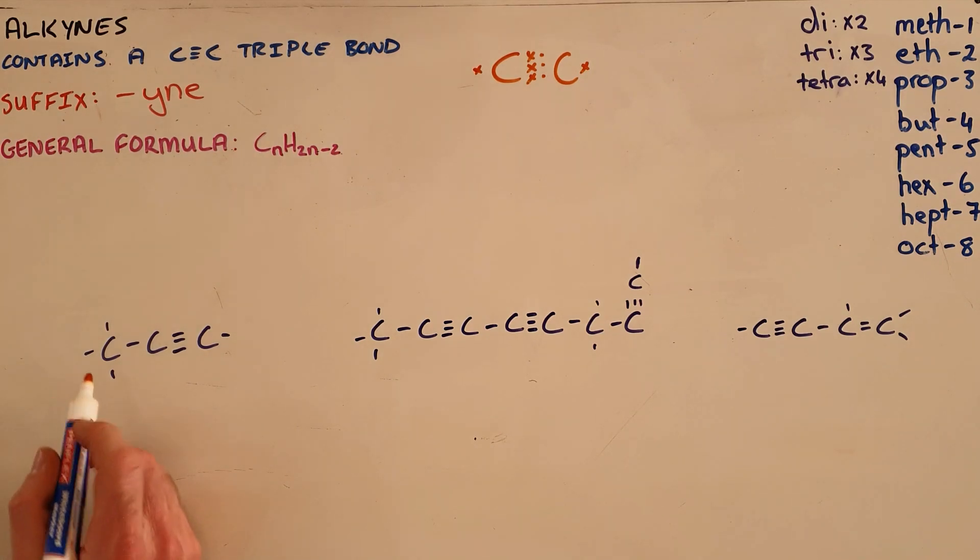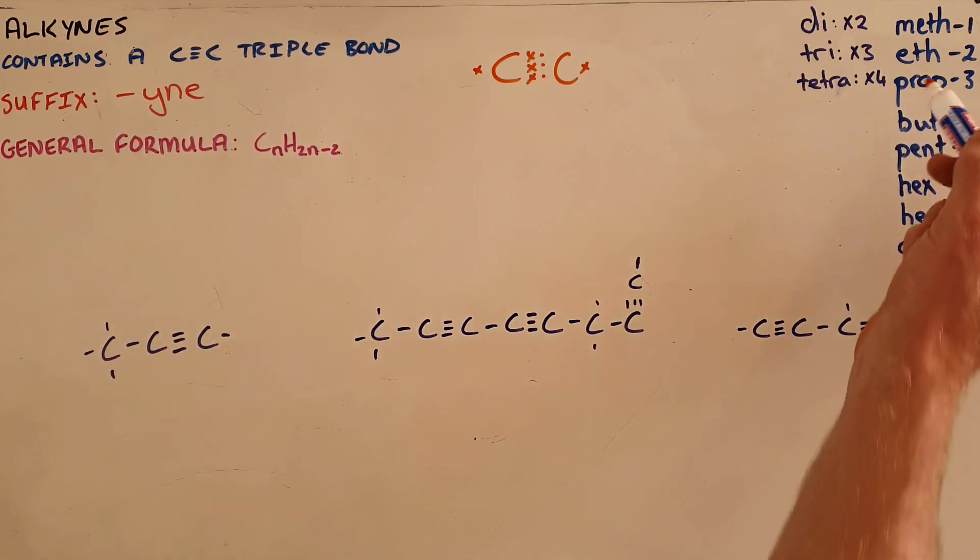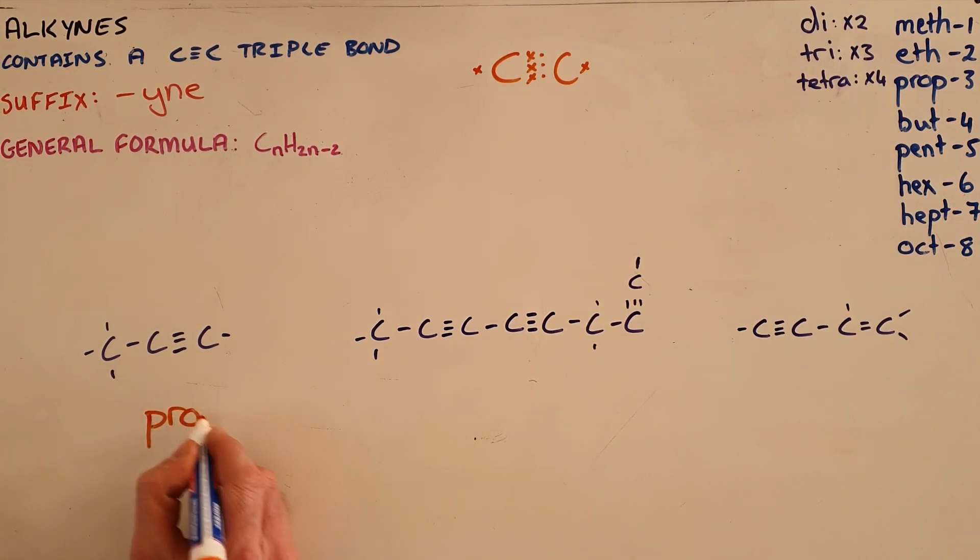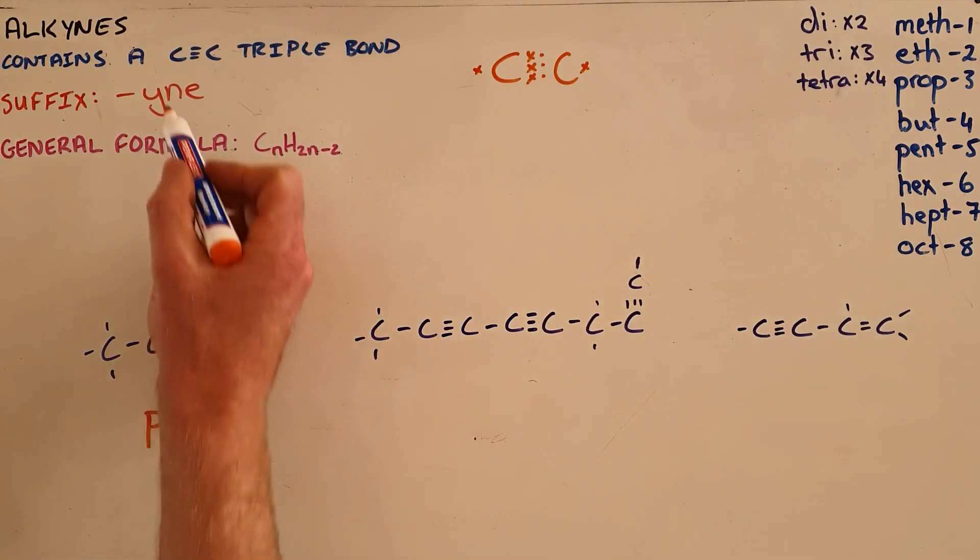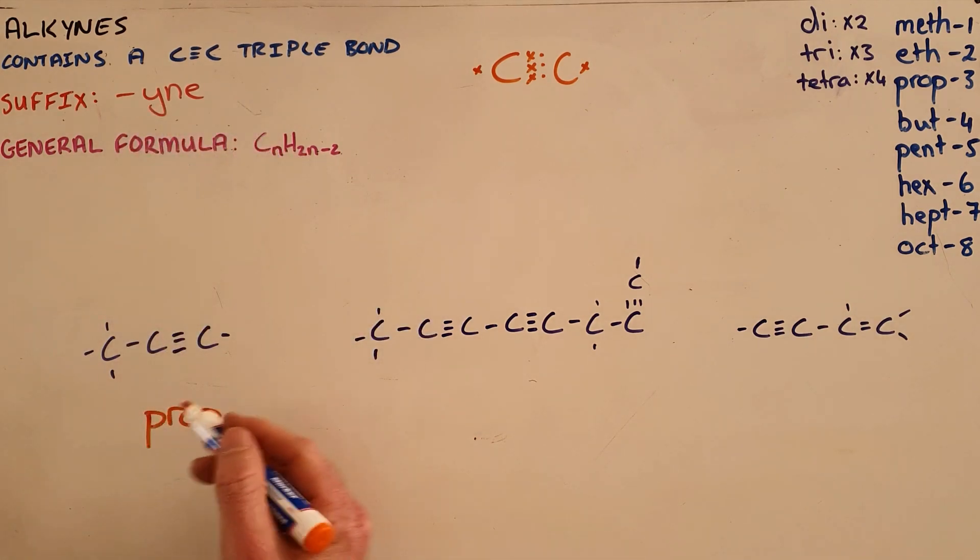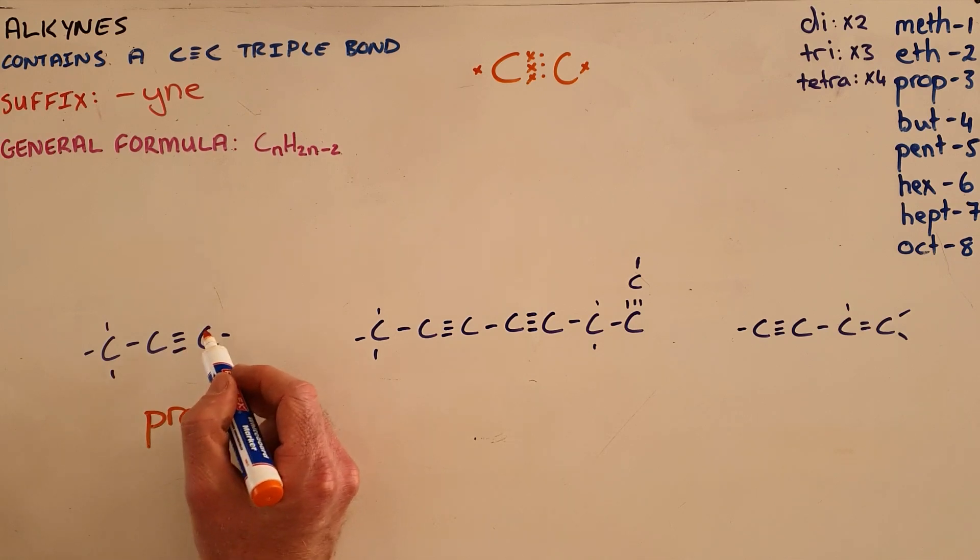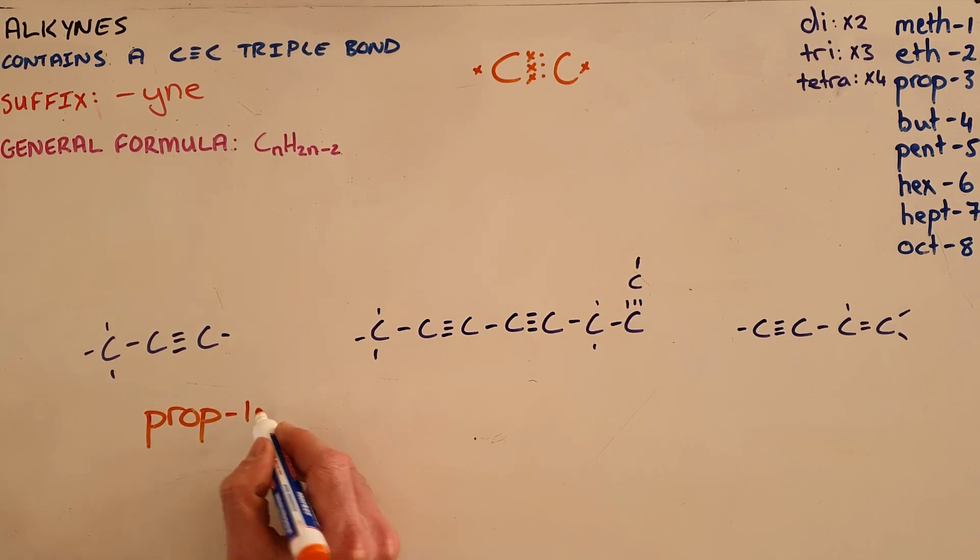We would name an alkyne by counting the number of carbons in the longest chain. In this case, this chain has three carbons. Three carbons gets the prefix prop and the suffix -yne, but we need to indicate the position of that triple bond. We always count from the side that makes that triple bond on the smallest number carbon possible, so this would be called prop-1-yne. The condensed structural formula for this molecule would be written as CH3CCH, and the reader would be required to see that a triple bond is necessary to ensure that each carbon has formed three bonds.